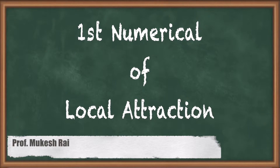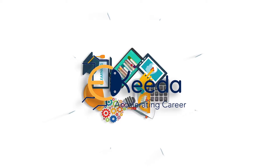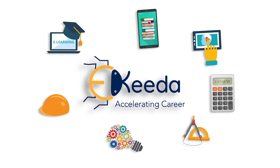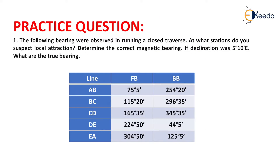Hello students. Today we are going to solve the first numerical of local attraction. The question is given as: the following bearings were observed in running a closed traverse. At what stations do you suspect local attraction? Determine the correct magnetic bearing. If declination was 5 degrees 10 minutes east, what are the true bearings?